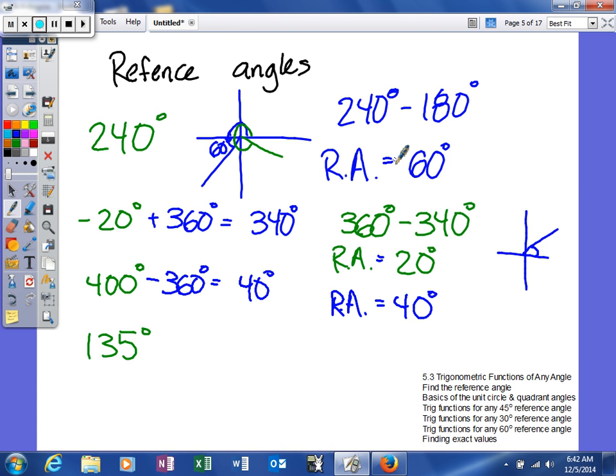And then lastly we have 135 degrees. Well 135 degrees is between 0 and 360. It's more than 90 but less than 180, so we terminate here, and then this is our reference angle. So we're gonna find it by basically taking 180 and subtract from it 135, and when you do that you should get your reference angle to be 45 degrees.